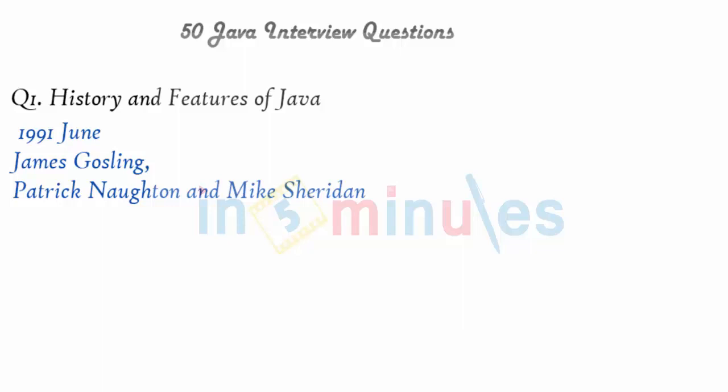Any guess what these three opted for? The story states that they decided to name it Oak, after an oak tree standing outside James Gosling's office. Interesting! But let's move on and talk about the goals they had in mind when designing this programming language.